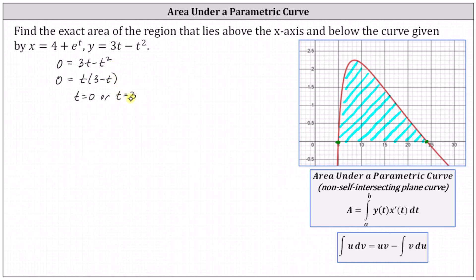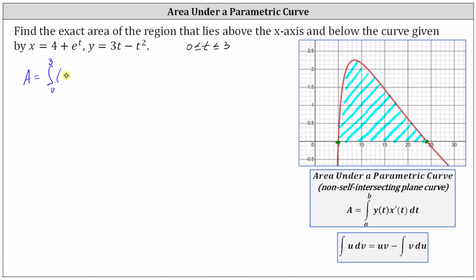So the interval of integration will be where t is greater than or equal to zero and less than or equal to three. The bounded area equals the integral from zero to three of y(t), which is the quantity three t minus t squared, times x prime of t dt, where x prime of t is the derivative of four plus e to the t, which is e to the t. Distributing, we write this as the integral from zero to three of three t e to the t minus t squared e to the t dt.